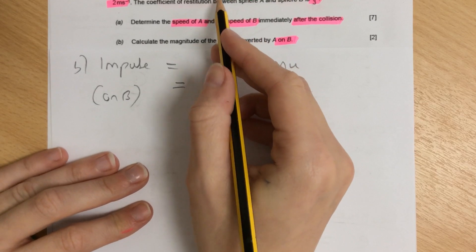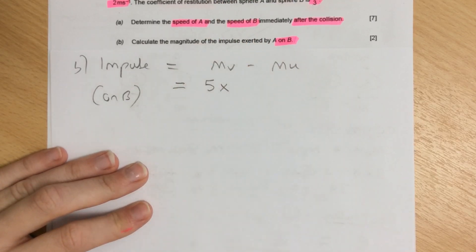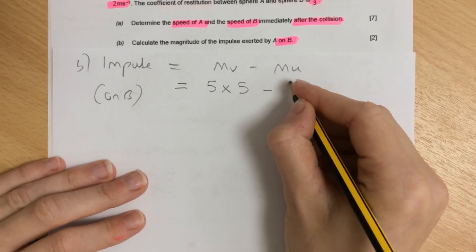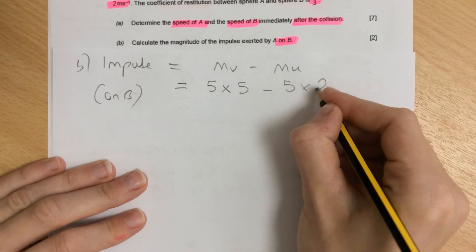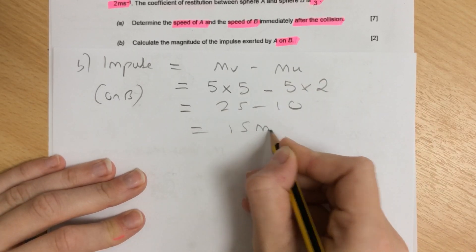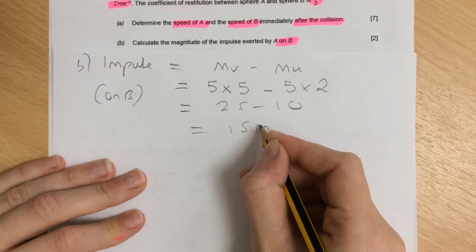The mass of B is 5, and the final speed of B is 5. The initial speed was 2. So impulse equals 5 times 5 minus 5 times 2, which is 25 minus 10, equals 15.